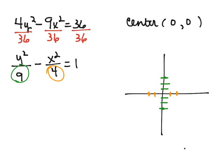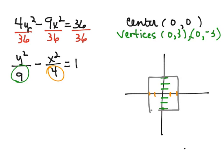And so using our vertices, which our vertices would actually be the endpoints of this major transversal axis, which would be (0, 3) and (0, -3). But using the vertices and these other two points, we're going to draw in a box.